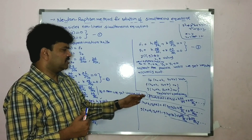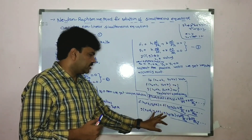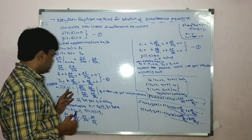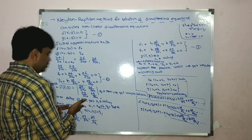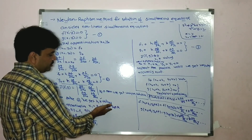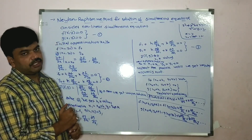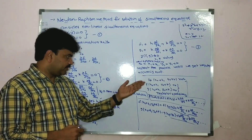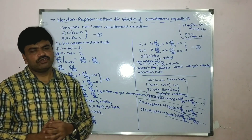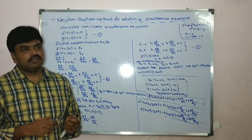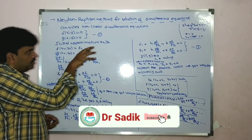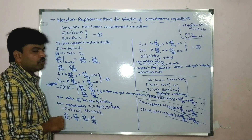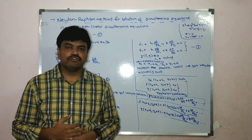We are neglecting the higher order terms. Thereby, we take the condition J of f comma g not equal to zero. Then the new approximation is x1 equal to x0 plus h and y1 equal to y0 plus k. I explained the concept which is suitable to solve problems directly. Hope you understand. Thank you for watching this video.